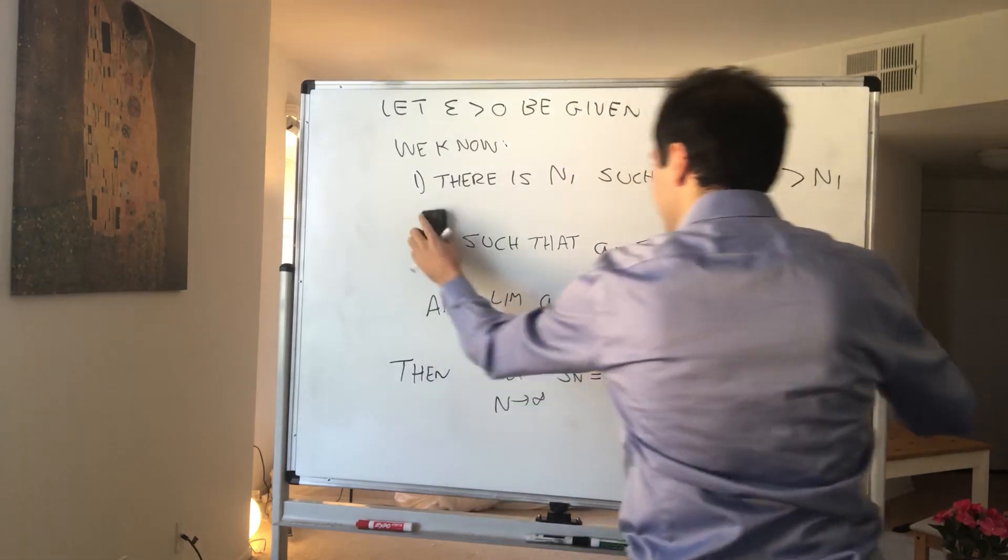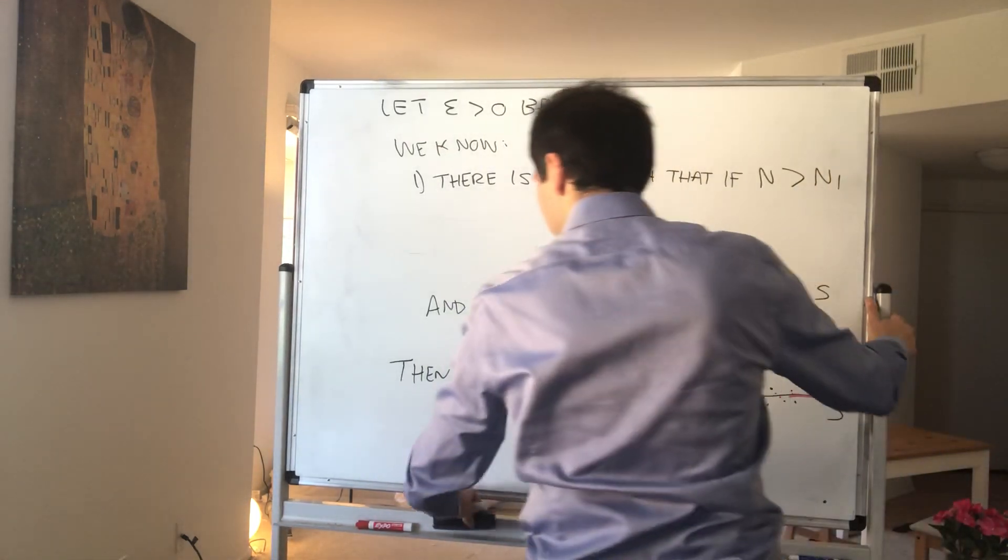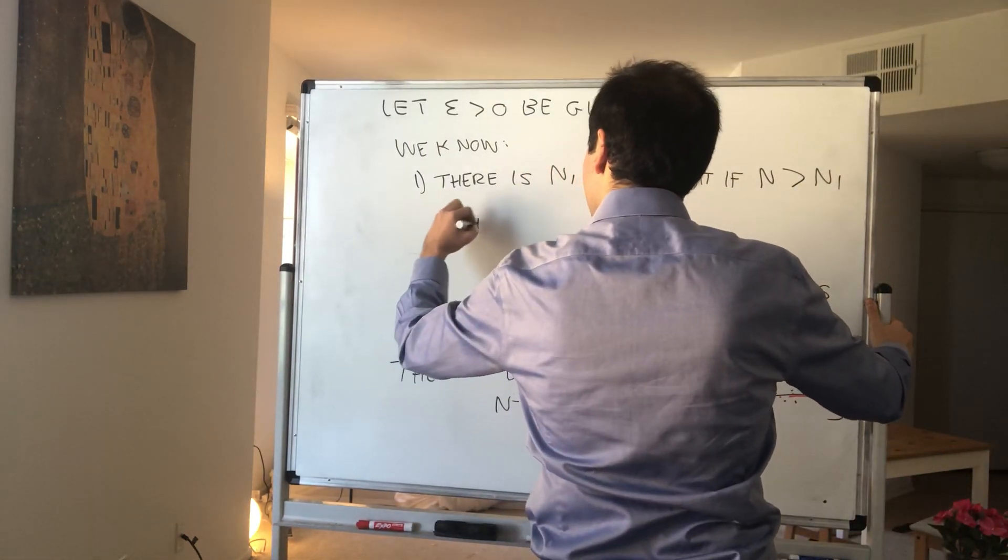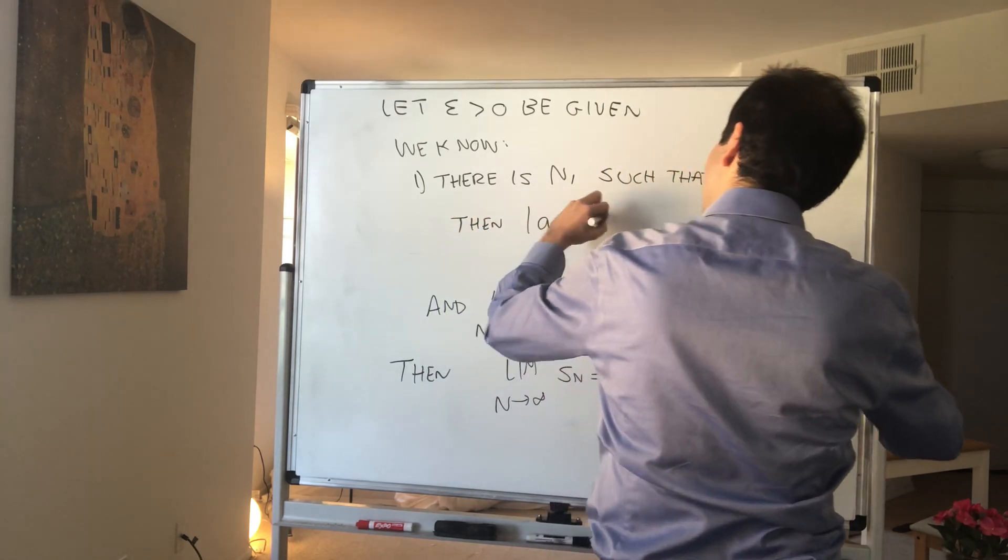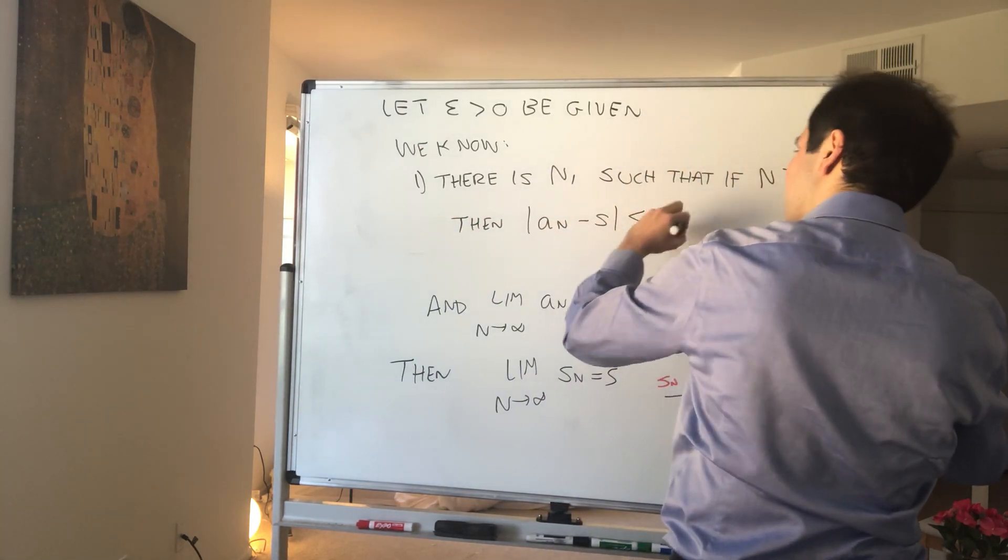So in other words, the absolute value of a_n minus s is less than epsilon.